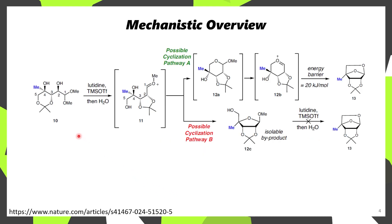The way that this works is: initially you add a Grignard reagent to that dioxinone, such as methylmagnesium bromide. Once that Grignard reagent has been added, through the use of the Lewis acid TMS triflate in the presence of the base lutidine, also known as 2,6-dimethylpyridine, this acetanide then migrates to the corresponding alcohol, and one of the methoxy groups migrates, forming an oxonium.